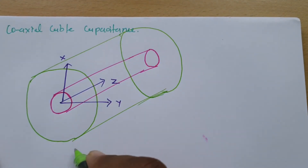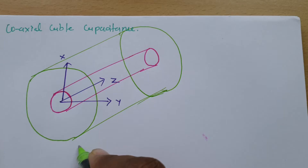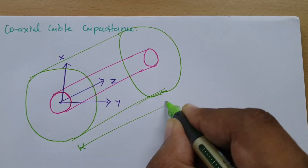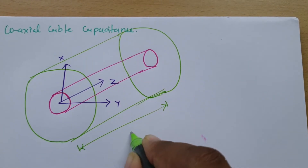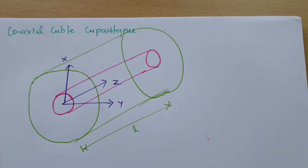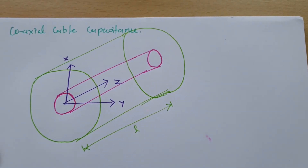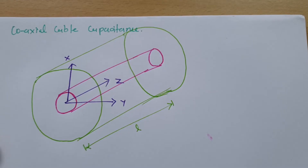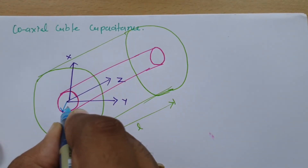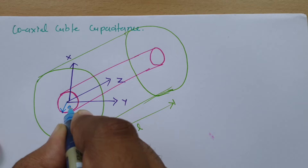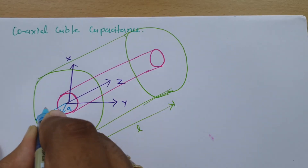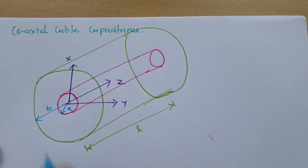Now there are a few data points you should know. One is the length of this coaxial cable — let us say that is L. The second is what is the inner radius — let us say inner radius is A. And the outer radius — let us say outer radius is B.